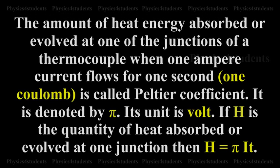The amount of heat energy absorbed or evolved at one of the junctions of a thermocouple, when 1 ampere current flows for 1 second, i.e. 1 Coulomb, is called Peltier Coefficient. It is denoted by Pi. Its unit is Volt.